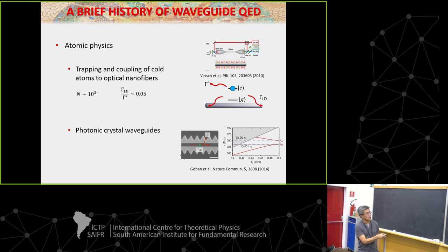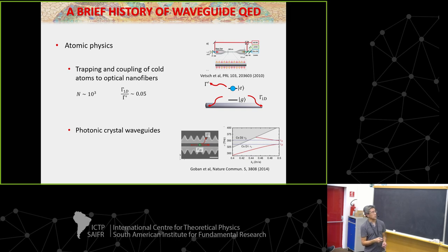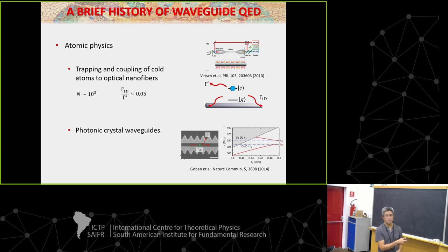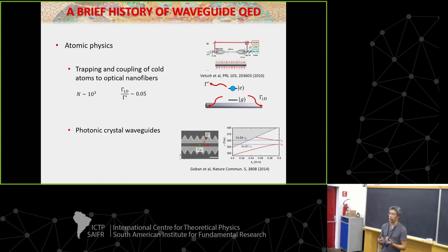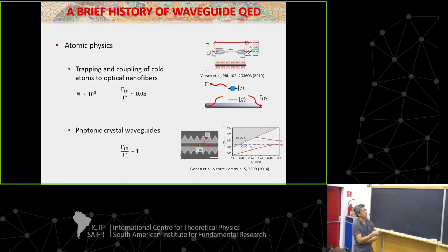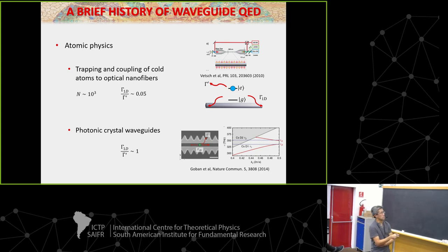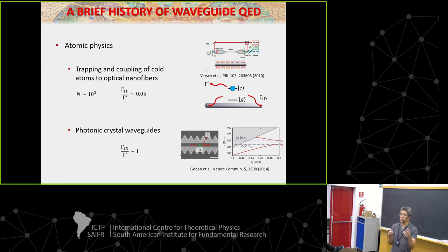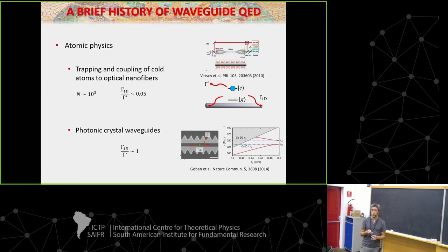Near the band gap, if you look at the slope of the dispersion relation as you approach the band edge, the group velocity goes to zero. Physically, light is no longer propagating straight through the system — it's taking multiple bounces back and forth. From the standpoint of the atom, the photon is effectively hitting the atom several times over. That allows you to enhance the coupling efficiency. In experiments so far, they can get about an order of magnitude increase in the branching ratio between emission into the guided modes versus 4π.